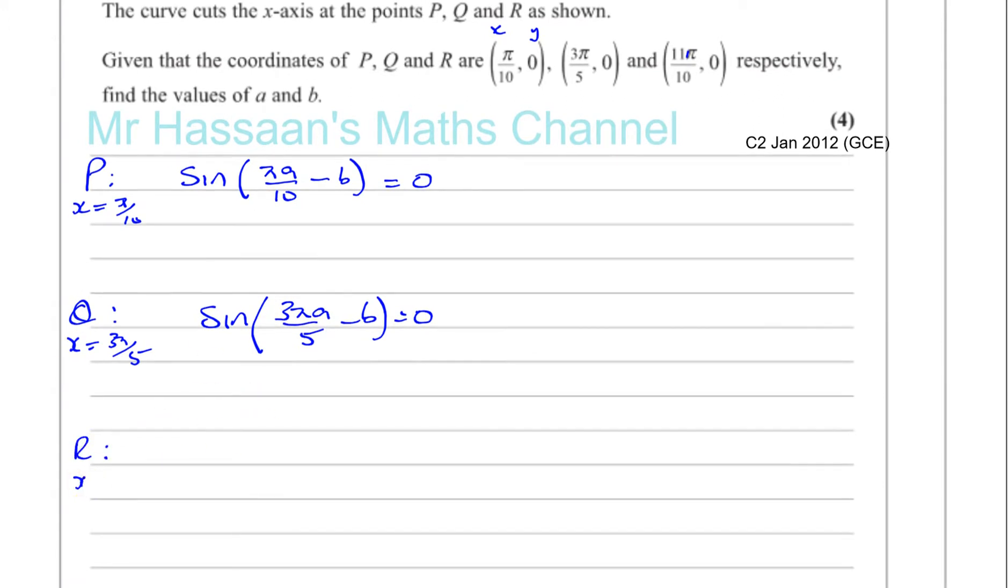And for R, we've got x equals 11 pi over 10. So we can say that sin(11 pi A over 10 minus B) equals 0.